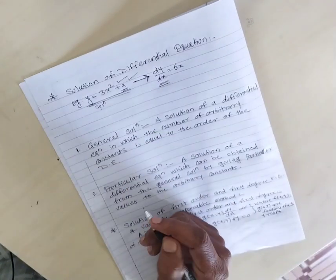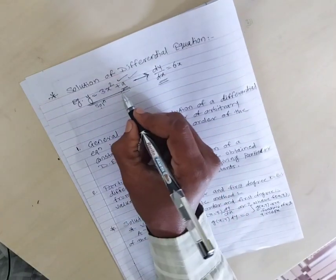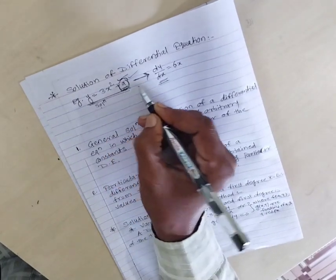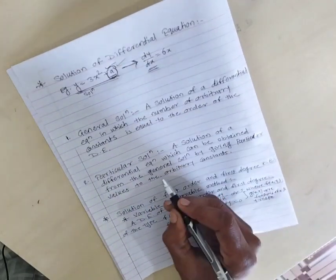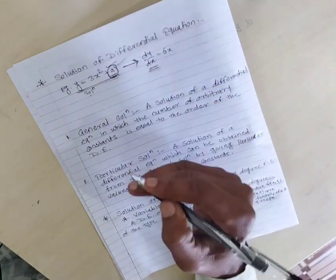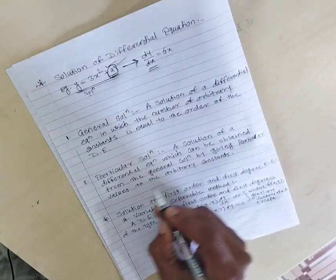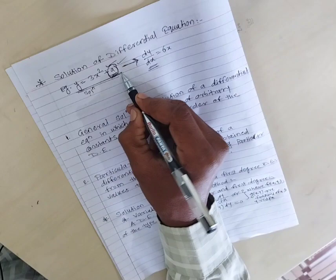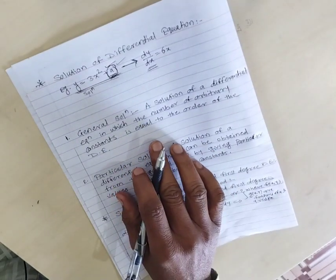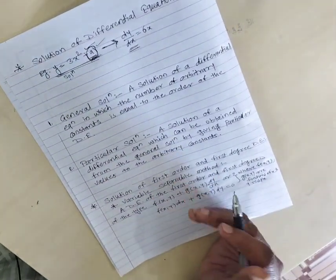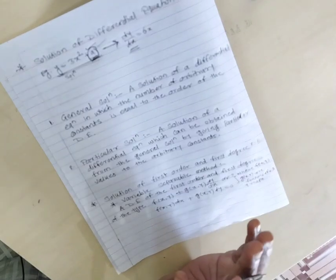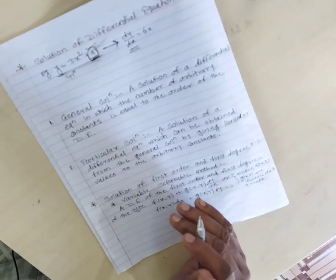The second type is the particular solution. The particular solution is obtained from the general solution by giving particular values to the arbitrary constants. We study two types: general solution and particular solution, for first order and first degree differential equations.